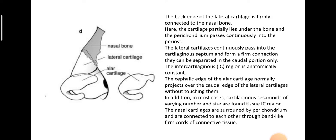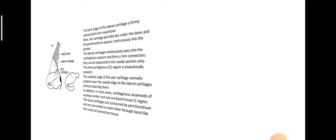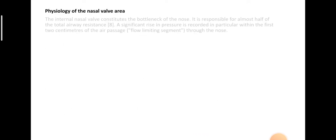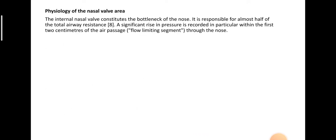In between these two cartilages, cartilaginous sesamoids of varying number and size are found in the inter-cartilaginous region. The nasal cartilages are surrounded by perichondrium and connected to each other through band-like firm cords of connective tissue. The internal nasal valve constitutes the bottleneck.